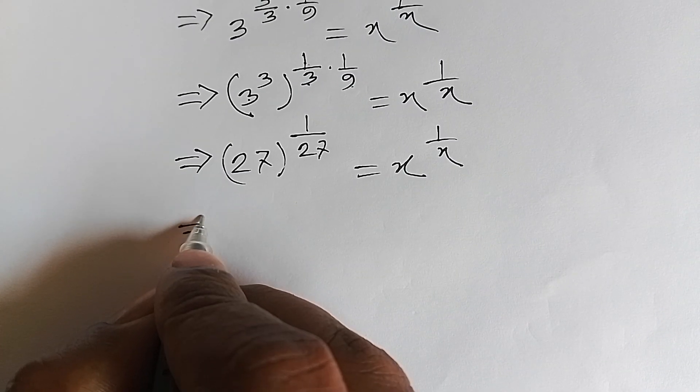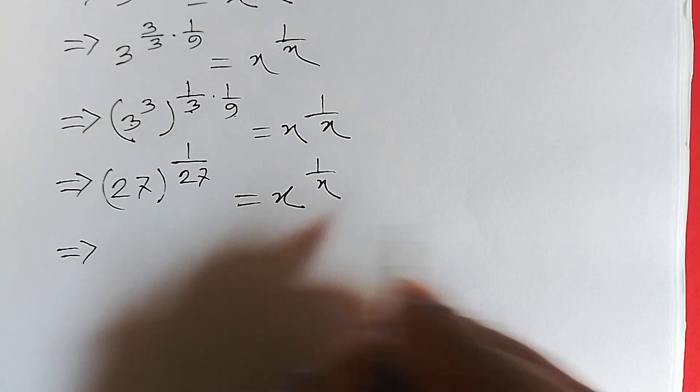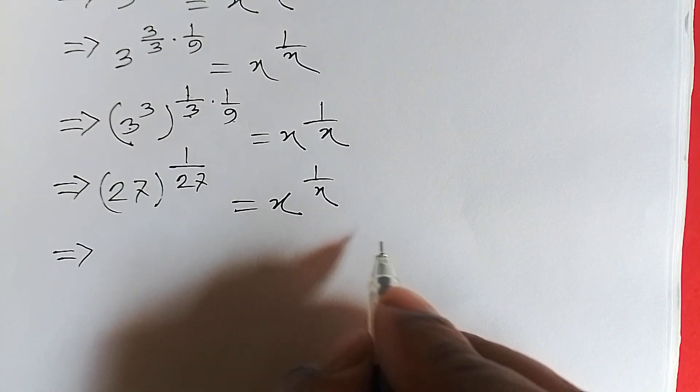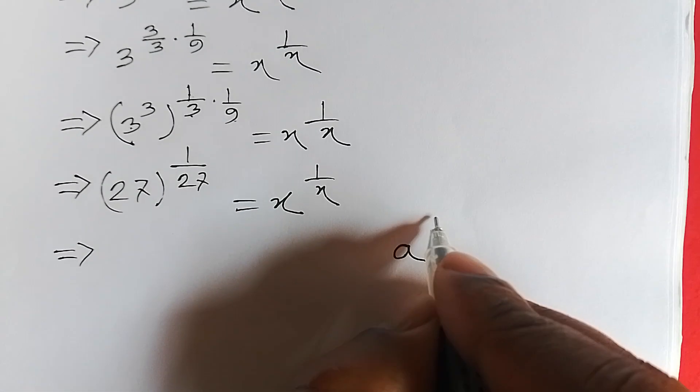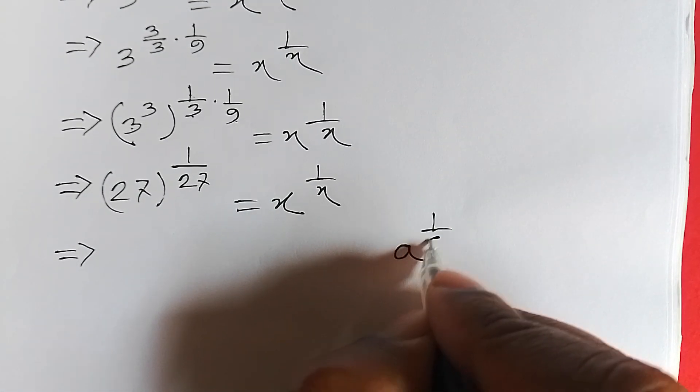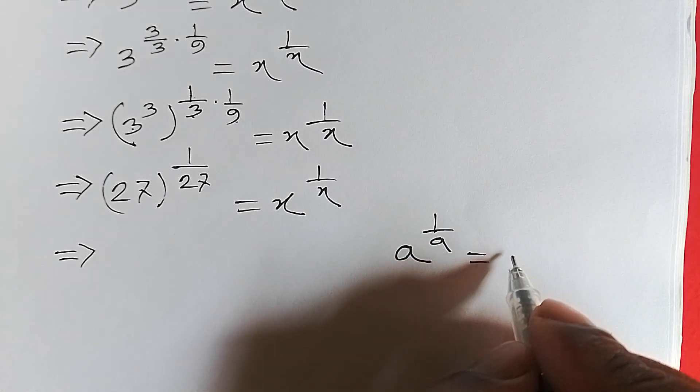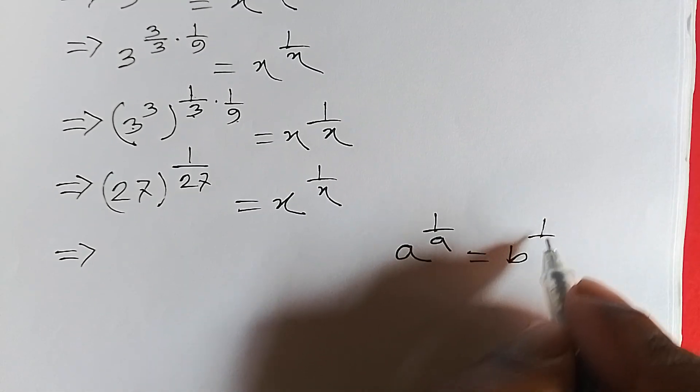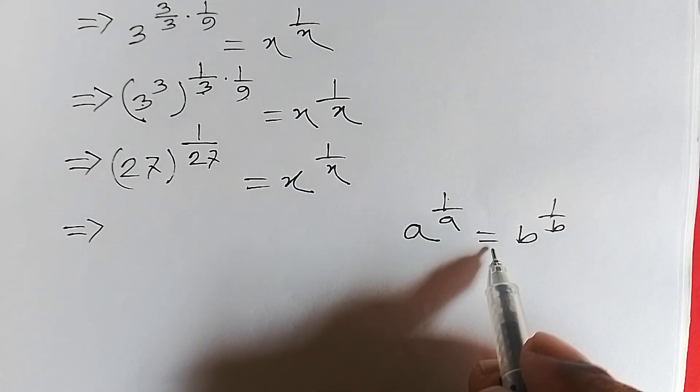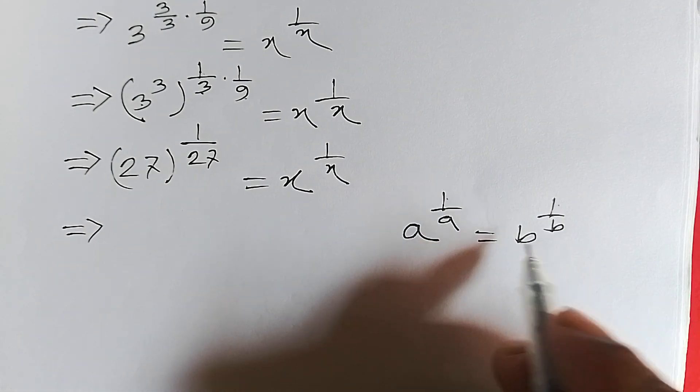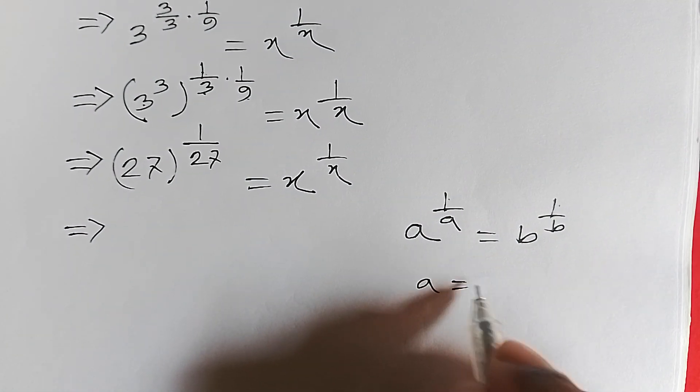Dear friends, here we use this formula: A to the power 1 over A equals B to the power 1 over B. When A to the power 1 over A equals B to the power 1 over B, then A equals B.